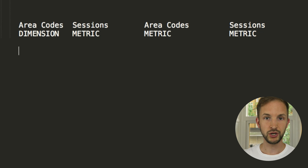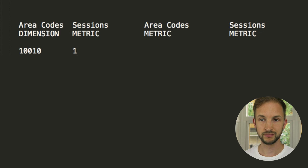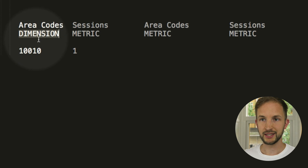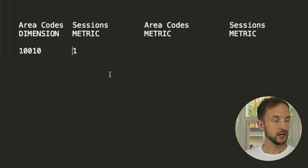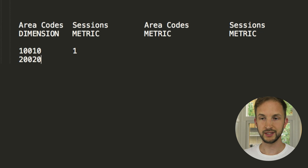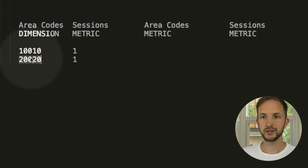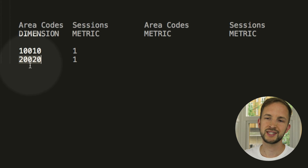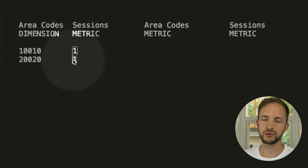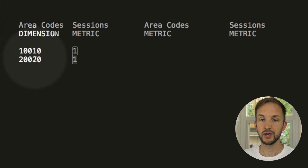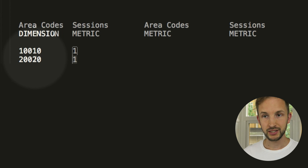To explain the difference between dimensions and metrics, let's use a small example. We have two sessions and we'll use area code either as a dimension or as a metric. In the first example, area code 110 comes with one session — this dimension attribute explains about this session. Then there's one more session which has a different area code, 220, also with one session. Because area code is configured as a dimension, it describes the metric, and because there are two different values, the sessions get split up.